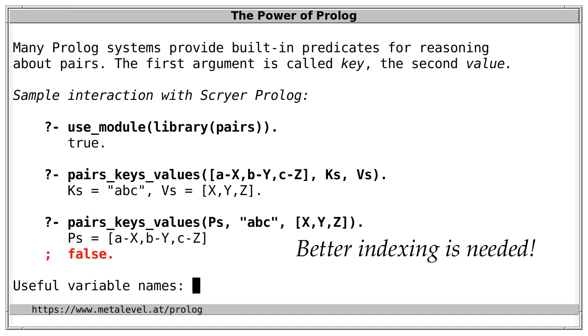We've now also seen a few useful variable names when reasoning about pairs. Besides the obvious choices pairs, keys and values, there are P's, K's and V's and also KV's for key-value pairs. And of course other abbreviations, which may make more sense depending on the concrete application and the meaning of the pairs.